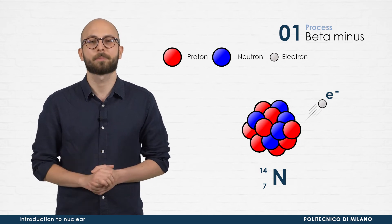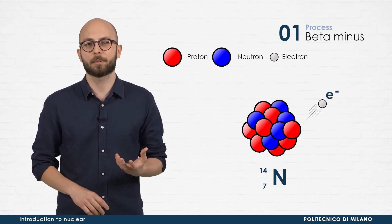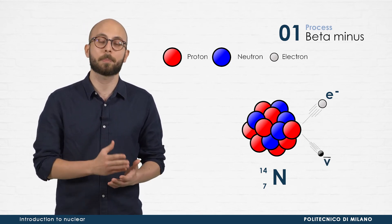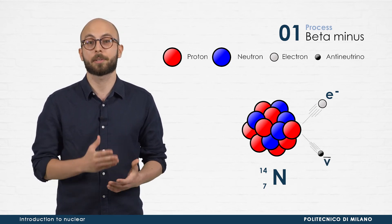And that's not all! The creation of a particle, the electron, is compensated by the creation of an antiparticle, called antineutrino.